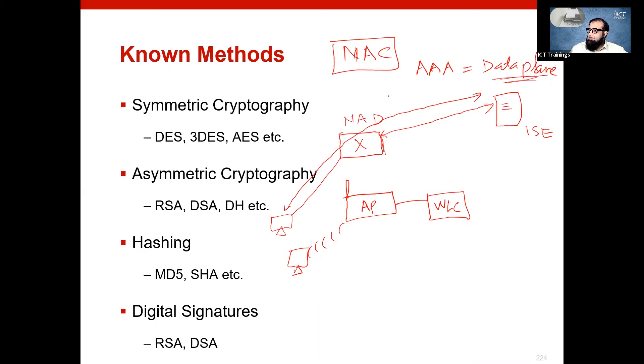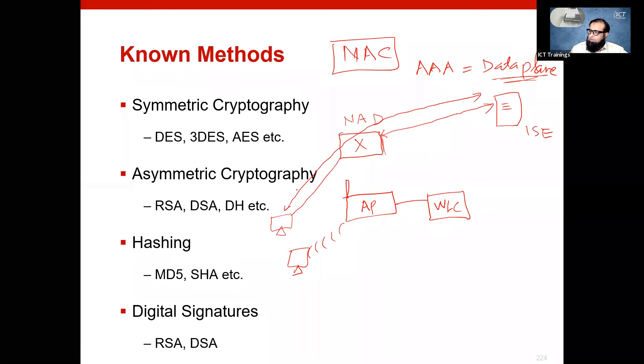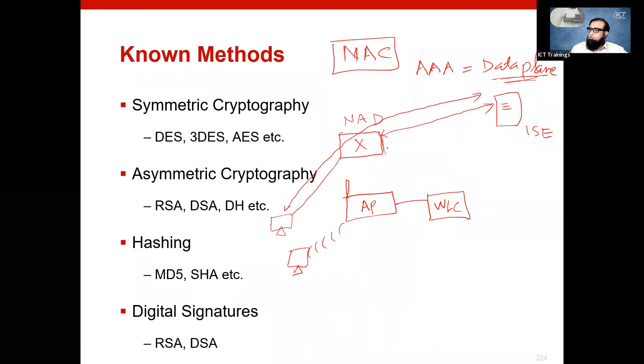In this data plane, NAD will act as a middle man only. Actually, your end user and ICE have authentication transaction. The end-to-end ICE and end user in which the translator will be translated, but the end user will be with ICE.